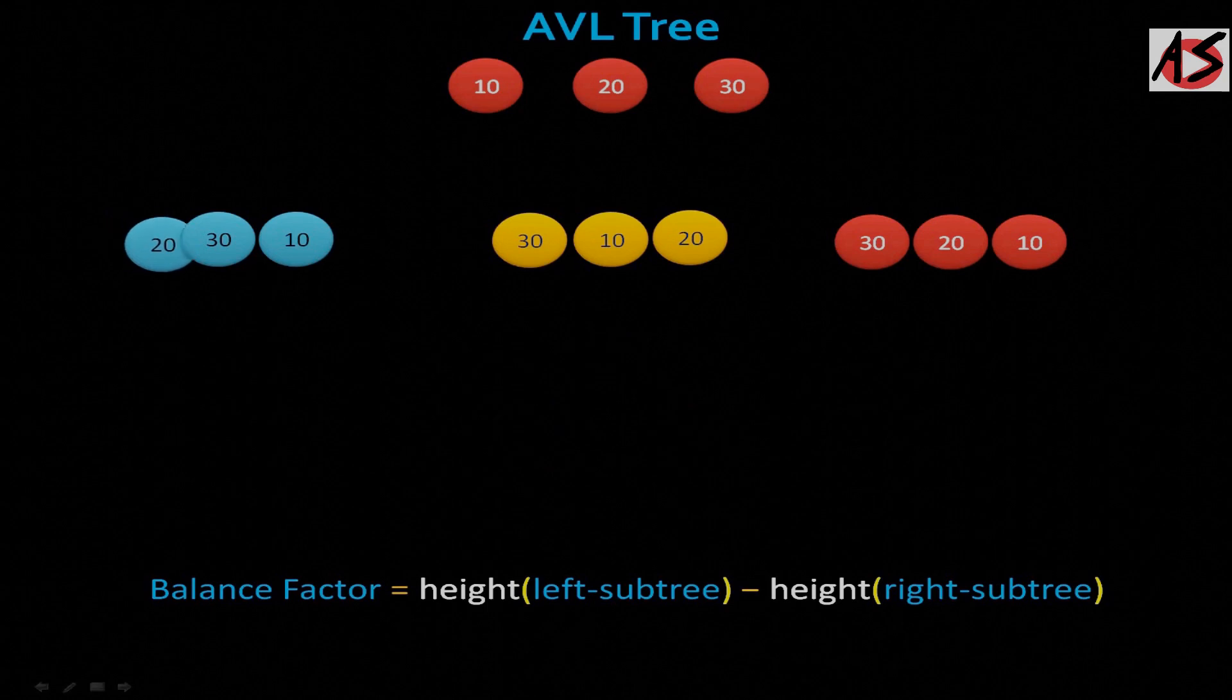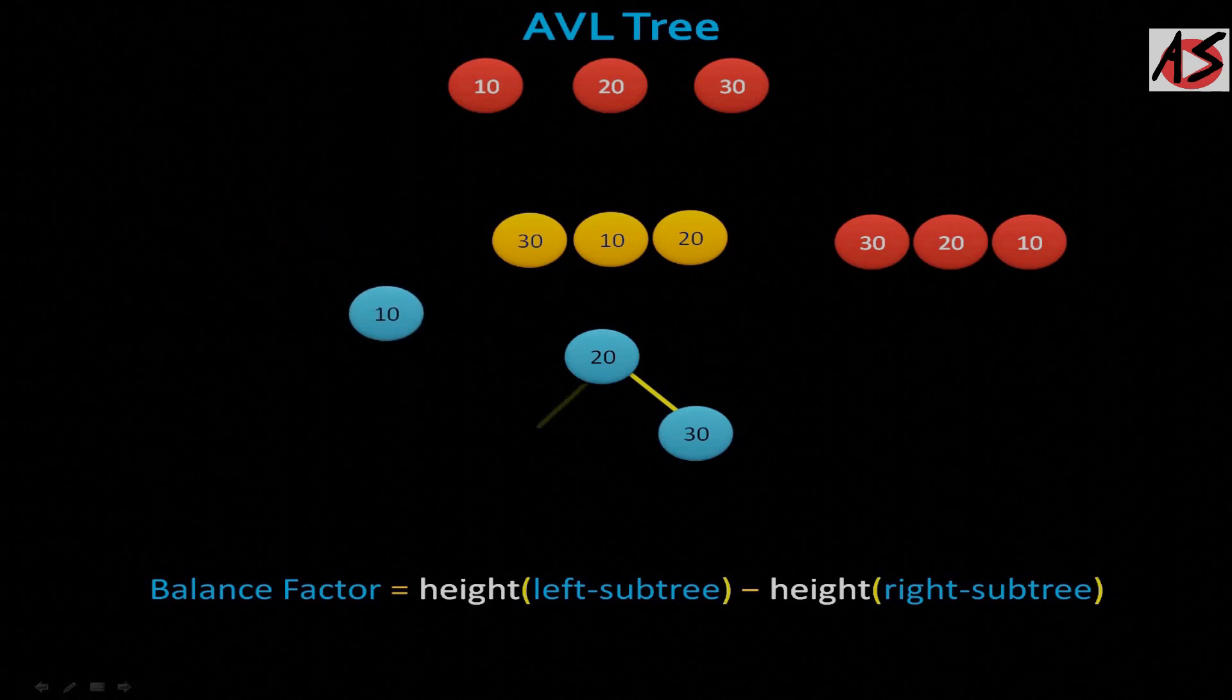For the next order, that is 20, 30, and 10 are inserted in this way. So your tree is balanced here. So no further action required.